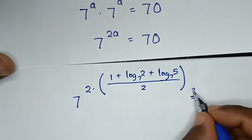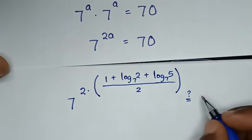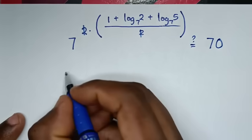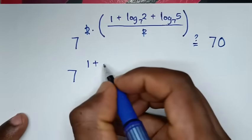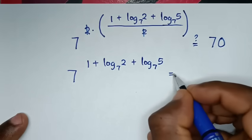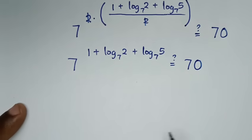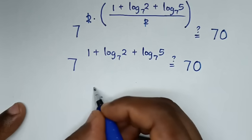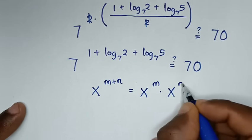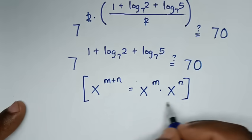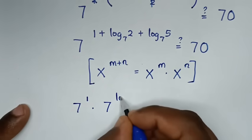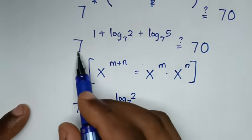Is it equal to 70? To simplify, the 2 in the exponent cancels the 2 in the denominator. So it will be 7 power of 1 plus log base 7 of 2 plus log base 7 of 5. This part is in the form of x power of m plus n, which equals x^m times x^n. Applying this rule: 7^1 times 7^(log base 7 of 2) times 7^(log base 7 of 5).